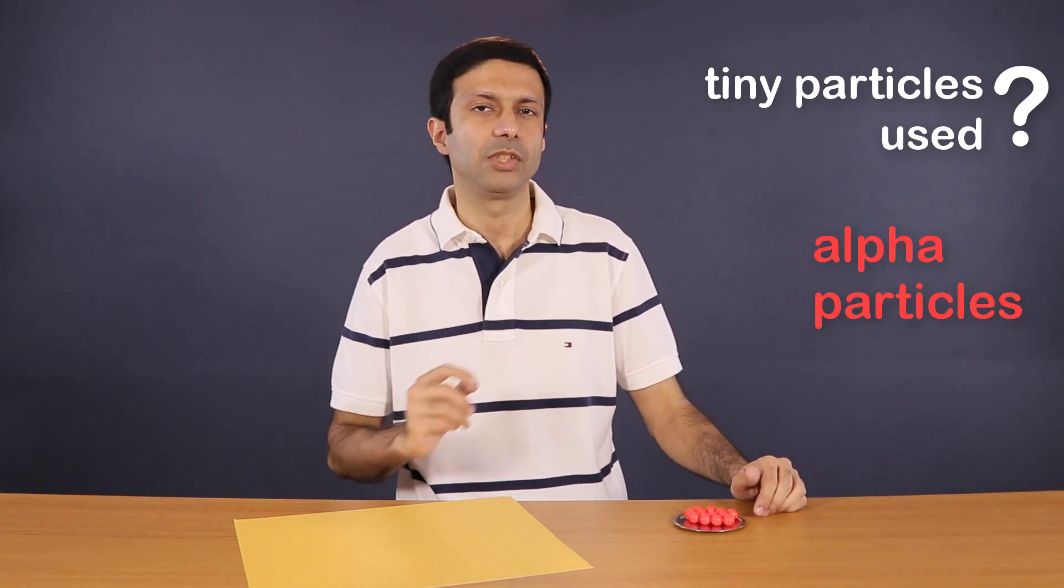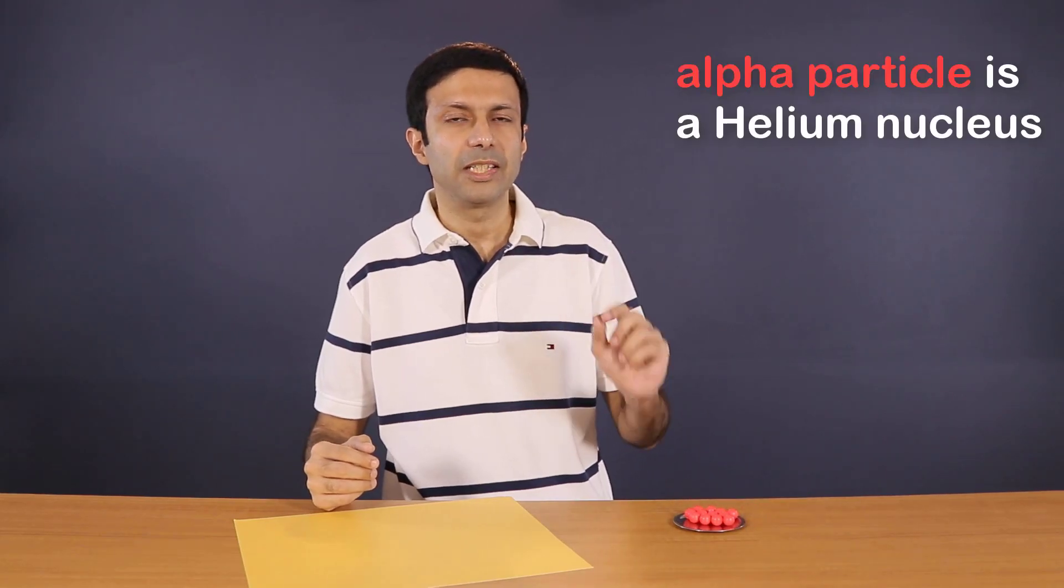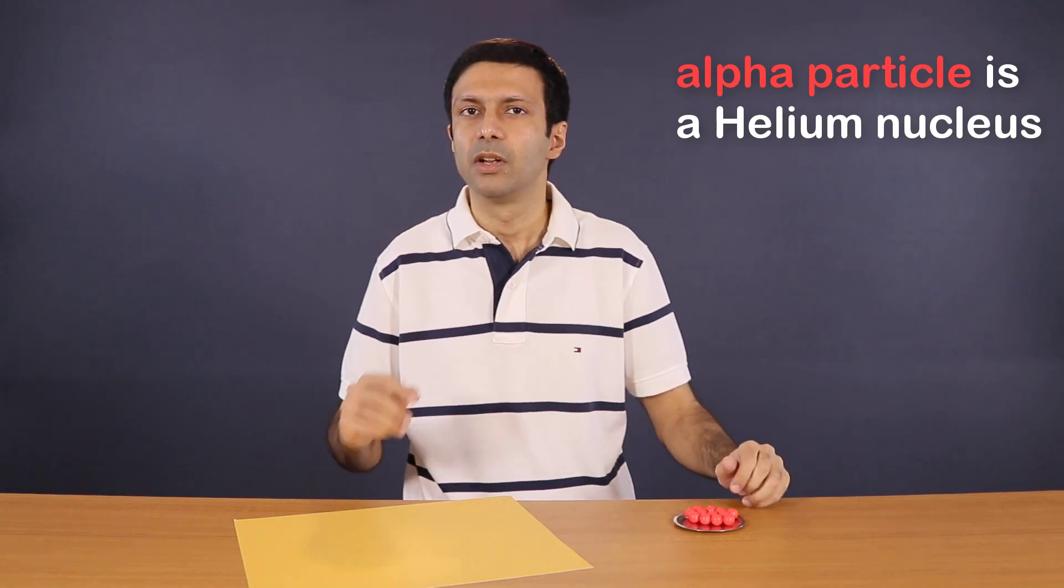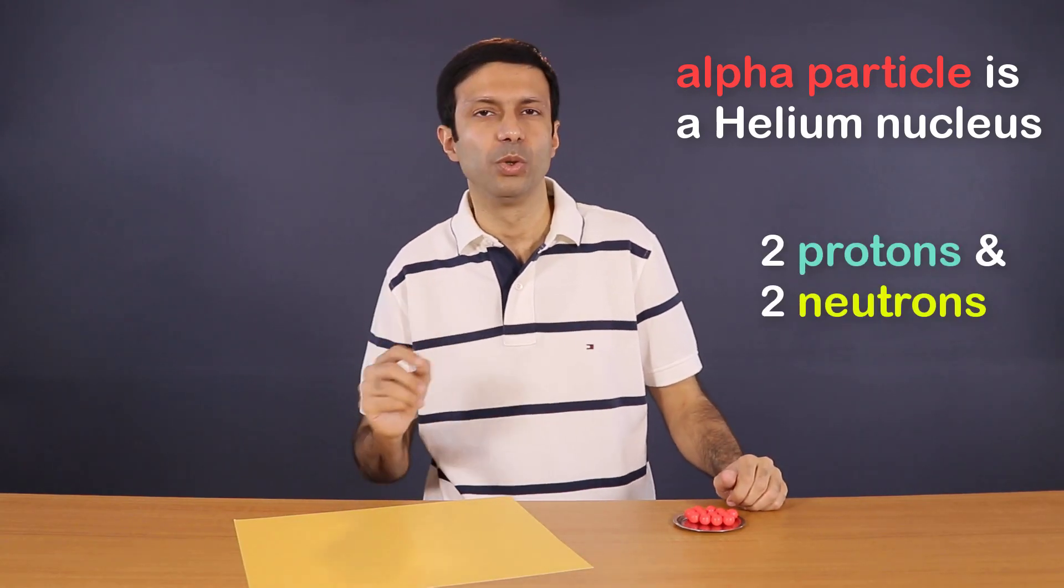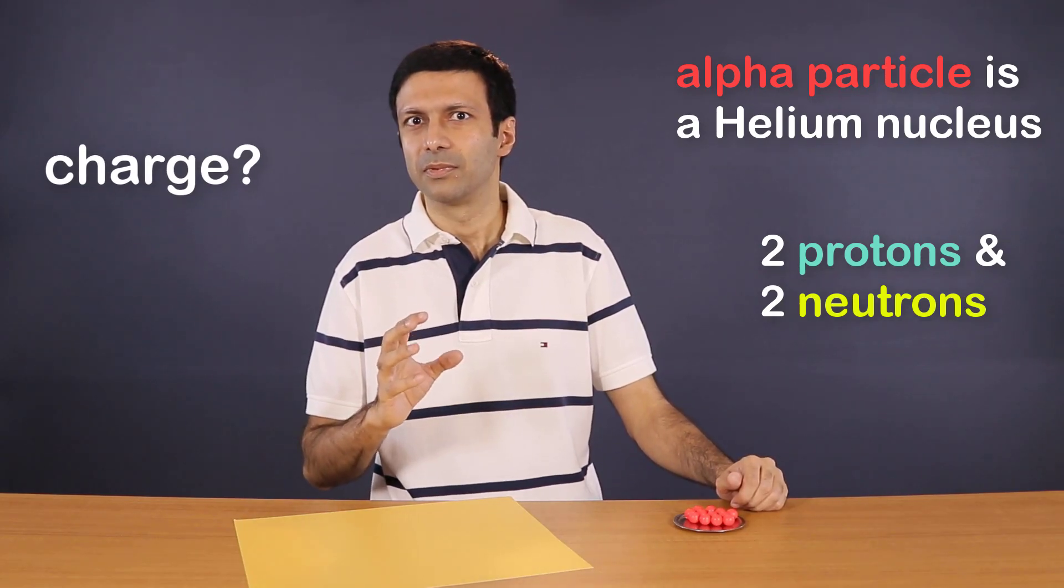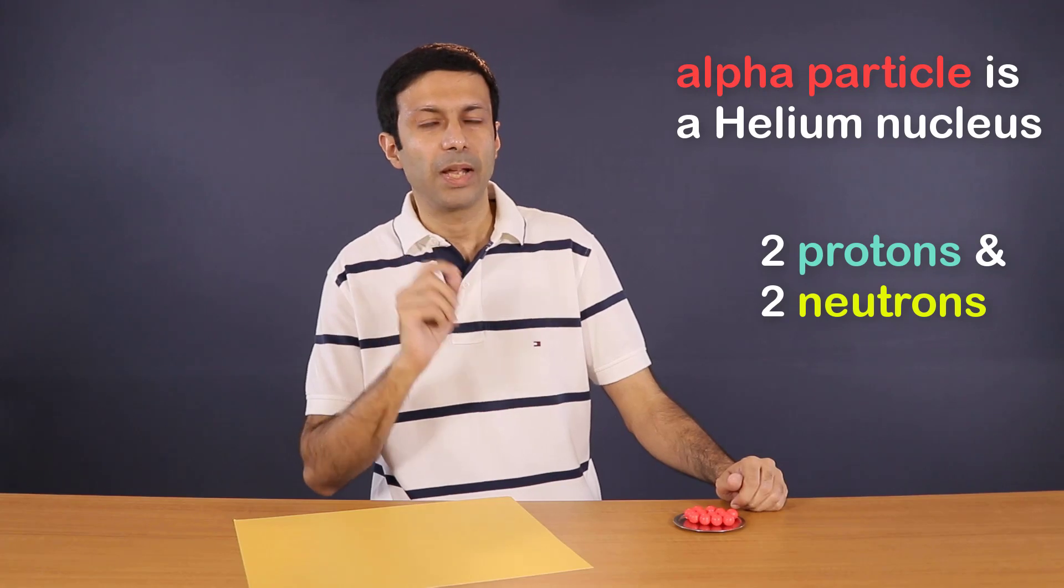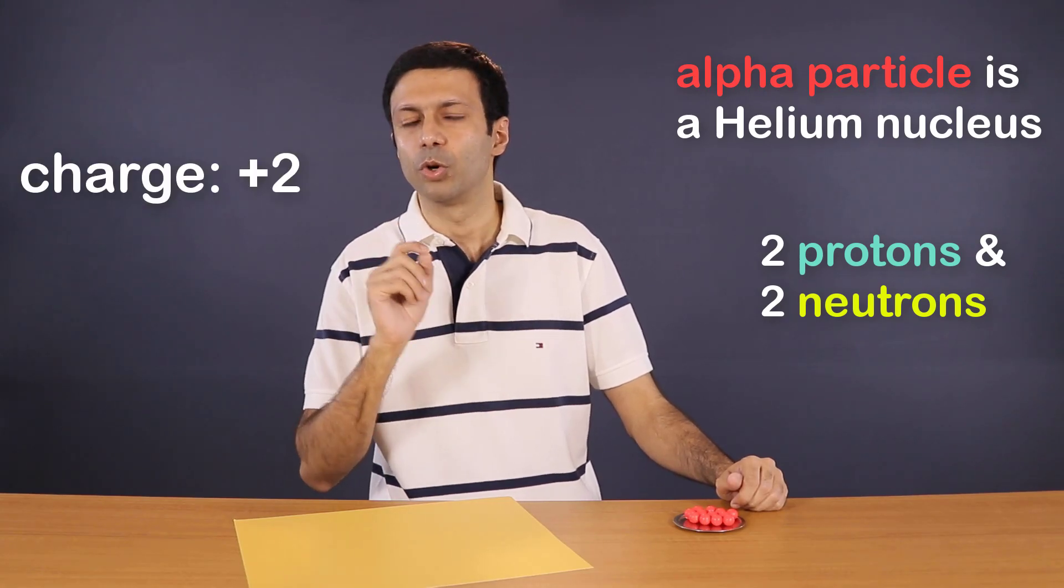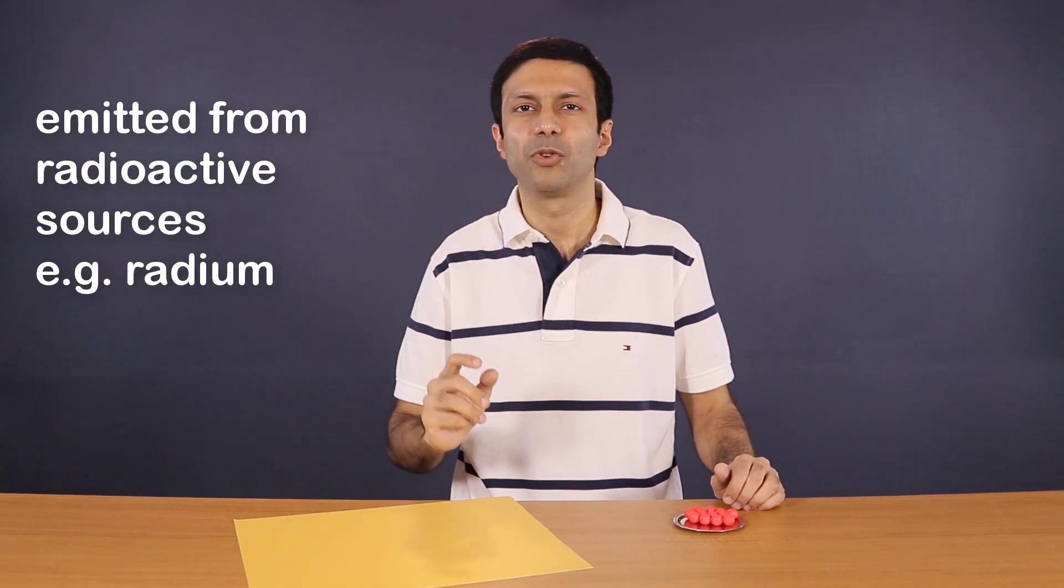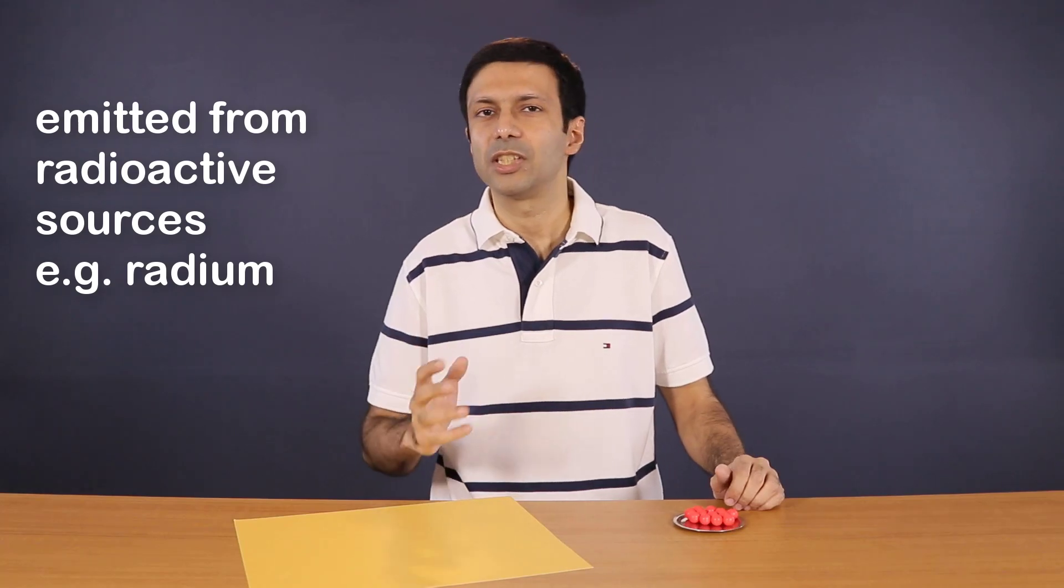They are called alpha particles, and they are positively charged. Each alpha particle is basically the helium nucleus, since it contains two protons and two neutrons. So what do you think is the charge of the alpha particle? That's right. It's plus two, since there are two protons in it. Alpha particles are like tiny bullets that are emitted from radioactive sources, such as radium.